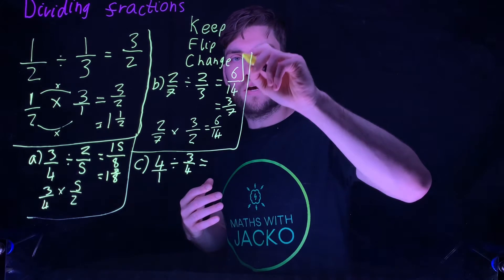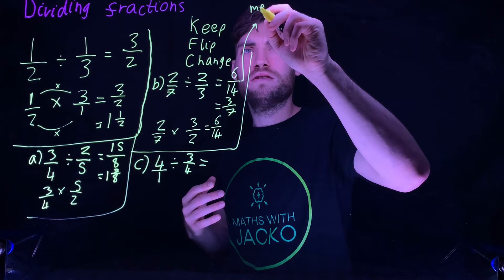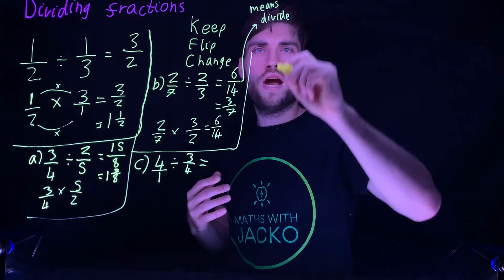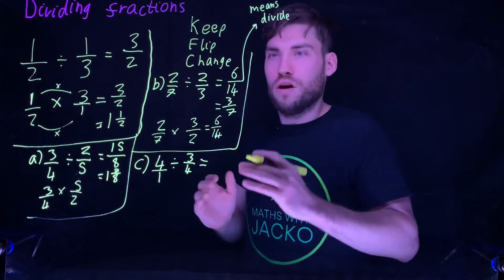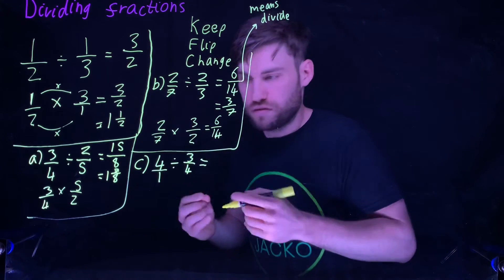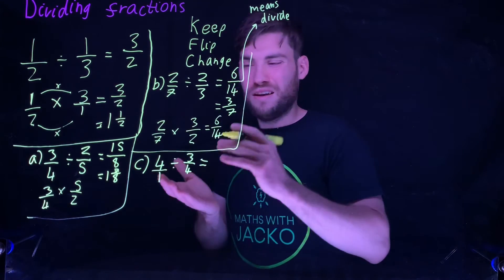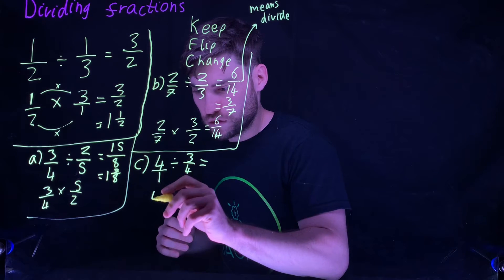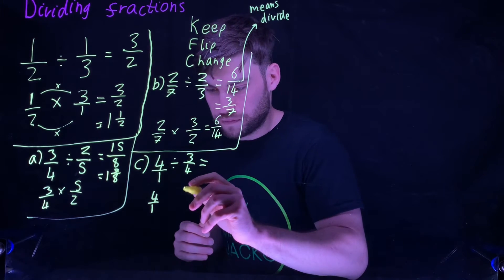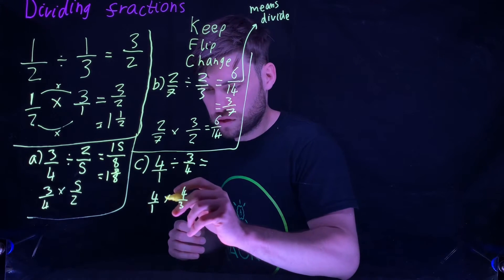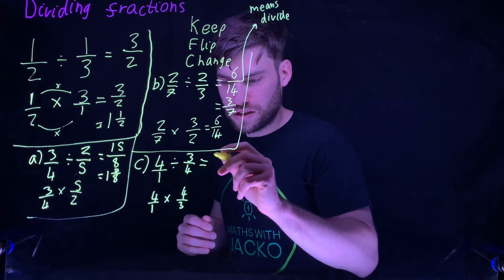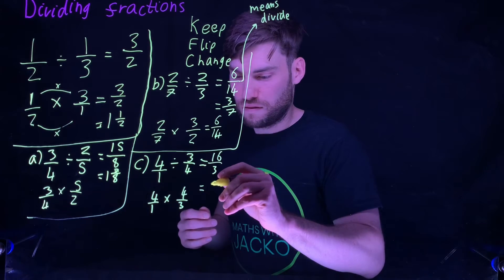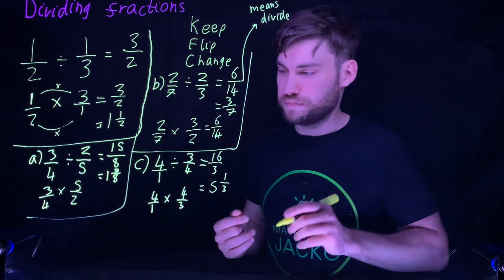The line in a fraction means divide. Four divided by one, which is four. We turn four into four over one, and now it looks similar to what we've already got. We just use KFC. Keep the first one, four over one. Flip the other one, four thirds. Change divide to multiply. I'm left with sixteen over three, which simplifies to five and one third.